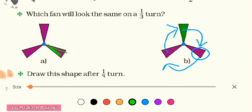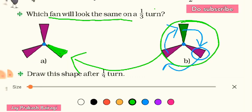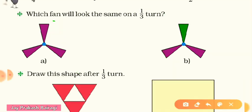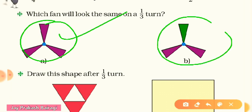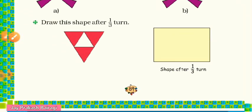Let me color this to explain. In one third turn the picture will look like this. The question was: which fan looks the same on one third turn? Picture A has all blades the same color, so it will look the same. Picture B has different colors, so it will not look the same.